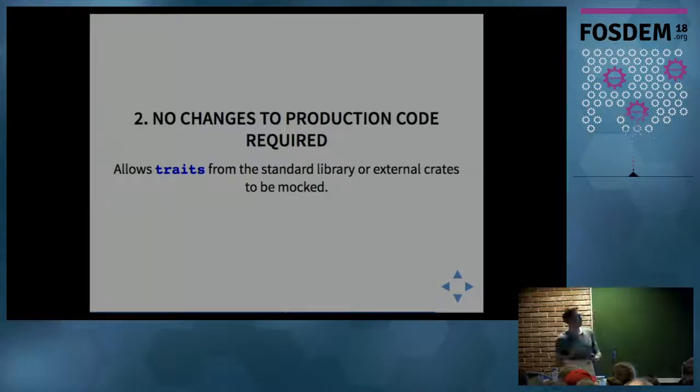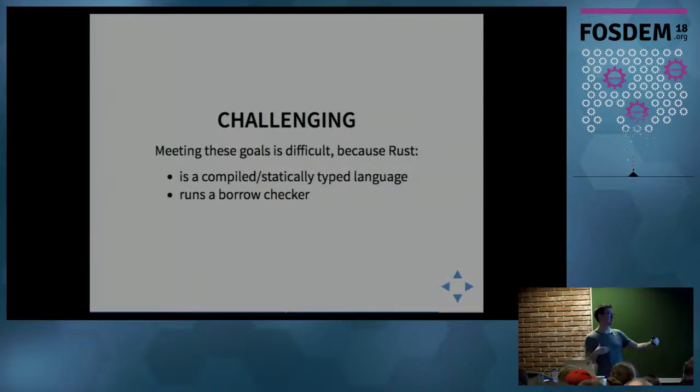These are challenging goals, because the original talk had a second part that was 20 minutes purely on why this was so challenging. But sadly we don't have time, but I would love to discuss it. Basically, it's really difficult. It's partly because Rust as a compiler is so strict that it actually makes all this automatic code generation and generic mock functionality quite difficult.